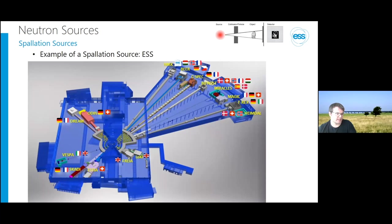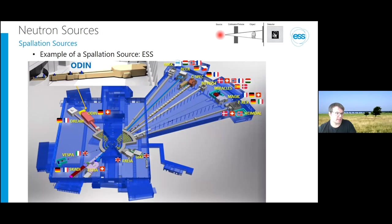At ESS, the target is in the center with moderators around it and neutron instruments surrounding it. The dedicated imaging beamline ODIN will be located 60 meters from the target. Other beamlines will also do imaging combined with other modalities — the engineering diffractometer BEER, the powder diffractometer Heimdal, and others. Imaging is becoming of increasing interest to other instruments as an additional option.